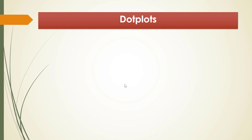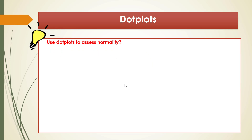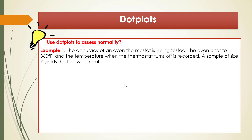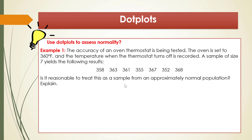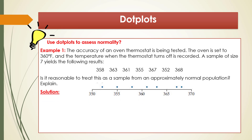Let's go to the first tool: dot plots. Here is an example — use a dot plot to assess normality. Example 1: The accuracy of an oven thermostat is being tested. The oven is set to 360°F and the temperature when the thermostat turns off is recorded. A sample of size 7 yields the following results: 358, 363, 361, 355, 367, 352, and 368. Is it reasonable to treat this as a sample from an approximately normal population? We are going to construct the dot plot and use it to examine the three features. Here is the dot plot of this sample.